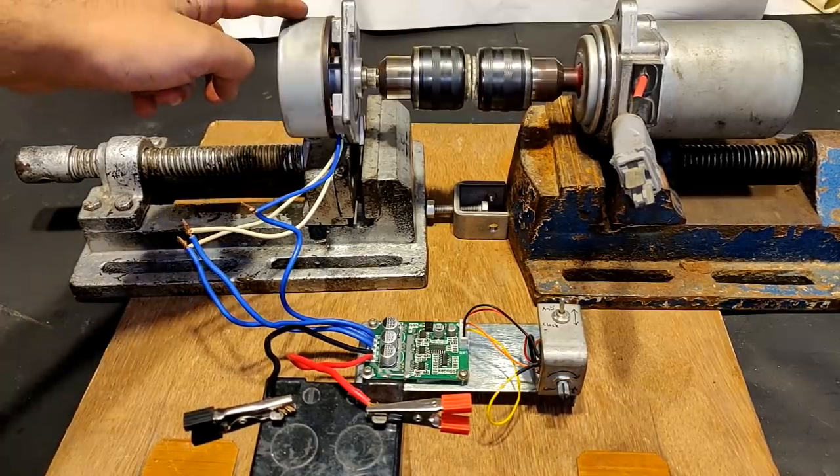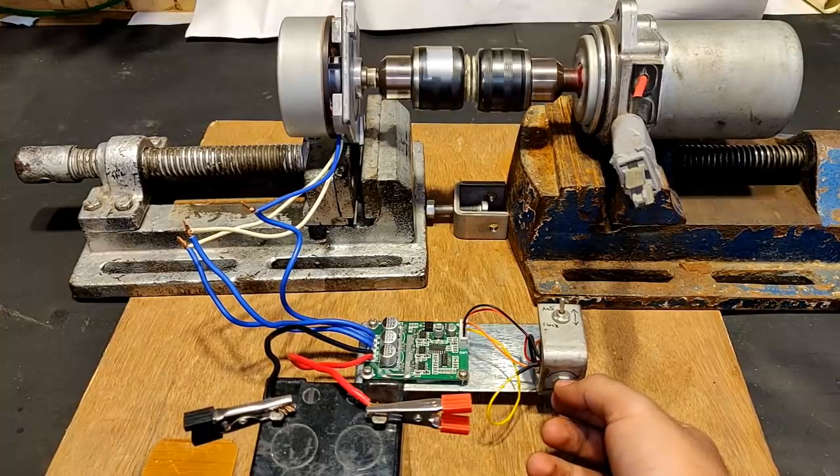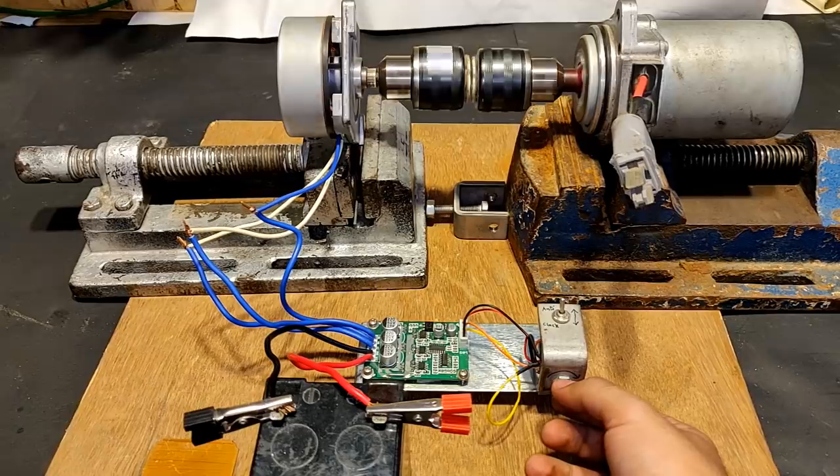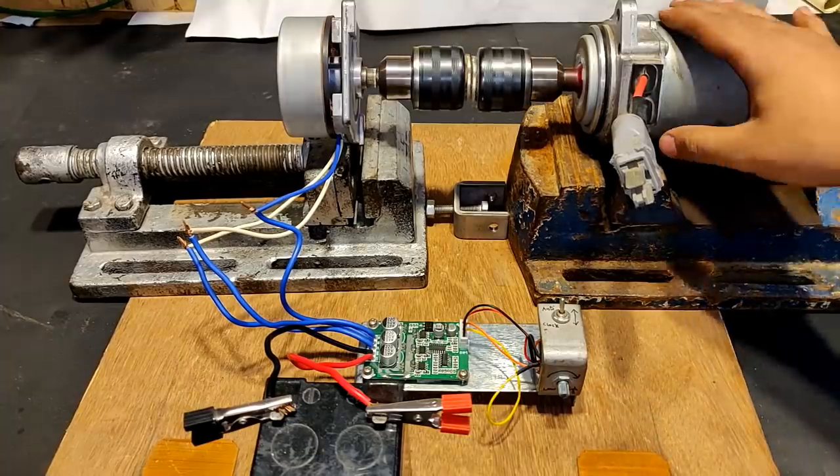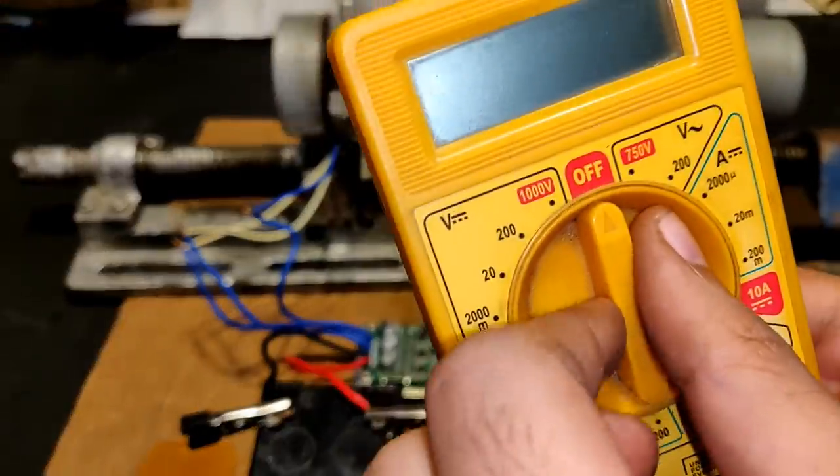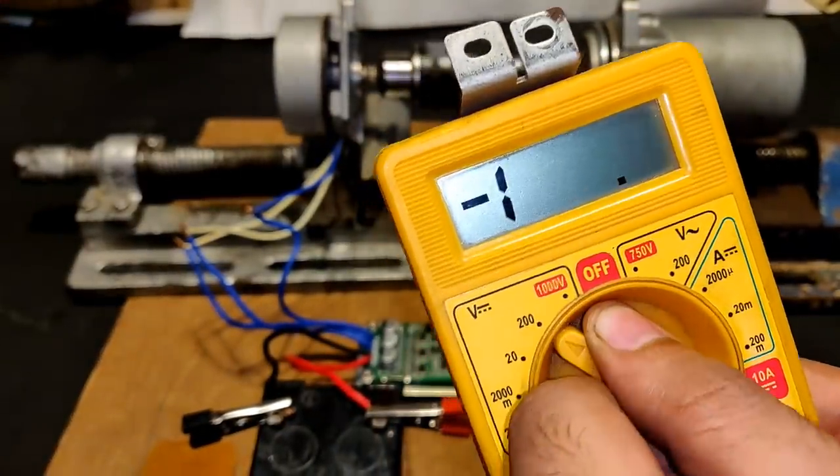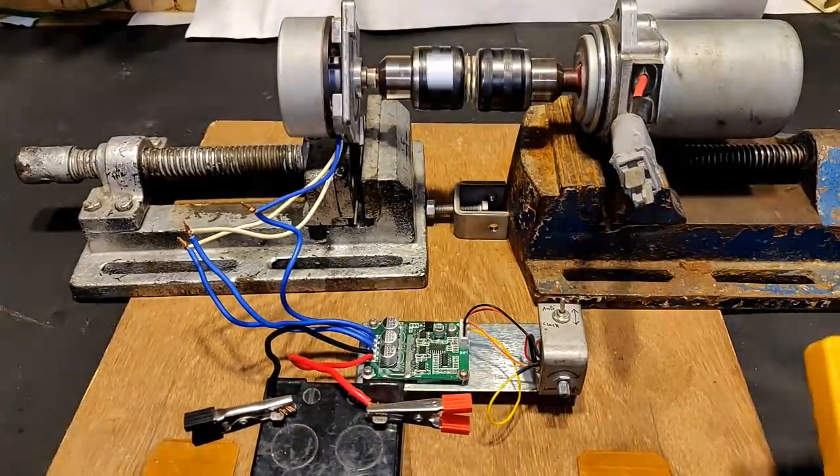You can see it is running very fast. Let's measure the voltage that this motor is generating at present with the help of a multimeter, pointing towards DC mode. Let's take it to 20 volts DC.